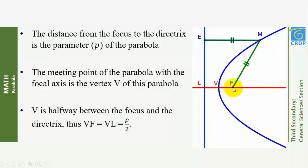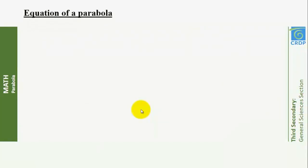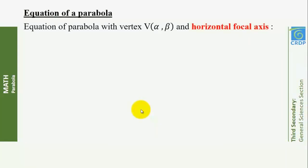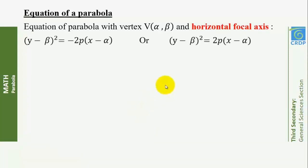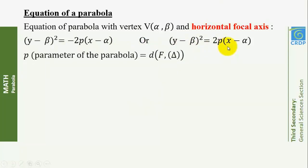The distance from the focus to the directrix is the parameter P of the parabola. The meeting point of the parabola with the focal axis is the vertex V. V is halfway between the focus and the directrix, so VF = VL = P/2. Now let's define an equation of a parabola.